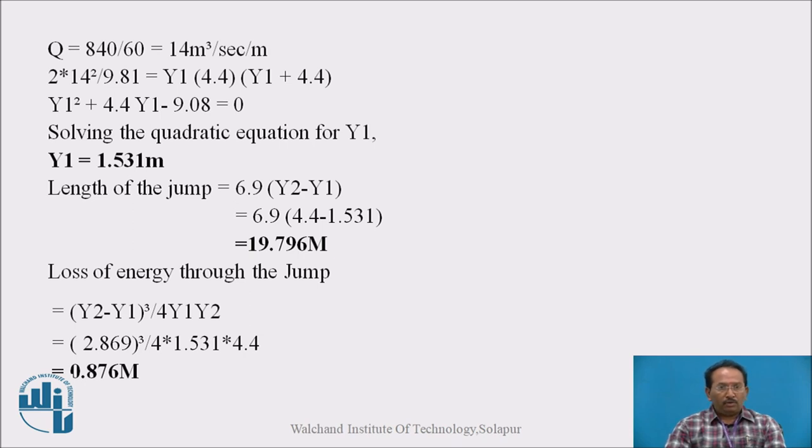So length of the jump. So y1 we will get. Now we will calculate the length of the jump. As per USBR, United States Bureau of Reclamation, that is USBR, has given the equation that is length of the jump is equal to 5 to 6.9 into bracket y2 minus y1. Here the constant we are taking as 6.9, that for the extreme case. So 6.9 into bracket 4.4 minus 1.531, y2 minus y1. So the length of the jump we got, that is 19.796 meters.